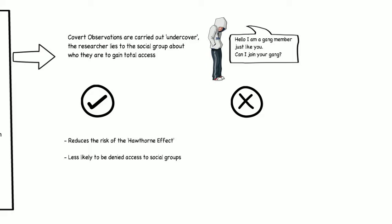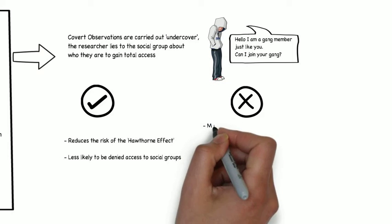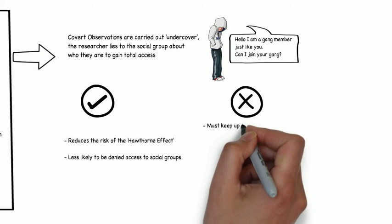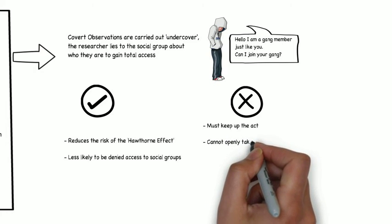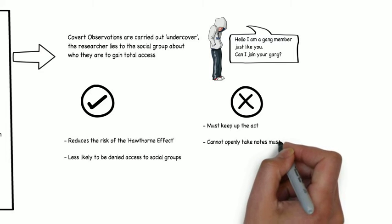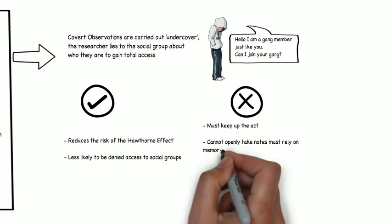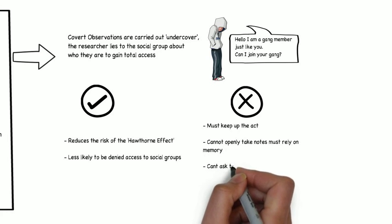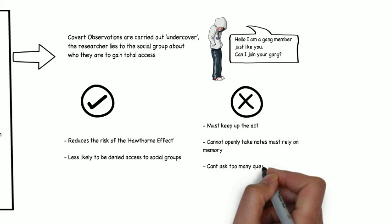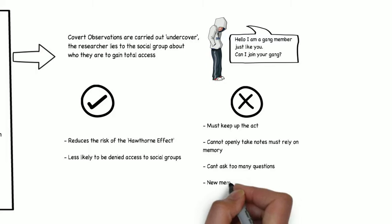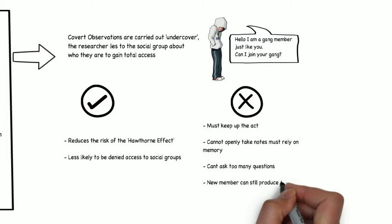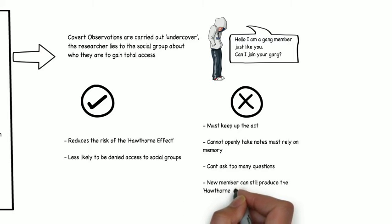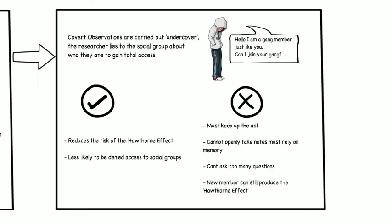However, covert observations also have some disadvantages. First, the researcher must keep up their act or their cover will be blown, which can have serious consequences. Second, the researcher cannot openly take notes, so they must rely on their own memory to document observations, which can affect the validity of their findings. The researcher also cannot ask questions to clarify misunderstandings. Finally, although the Hawthorne effect is believed to be reduced, a new member of the group could still affect group behaviours and cause the Hawthorne effect.